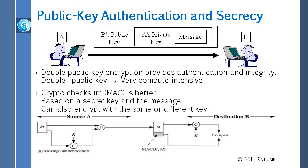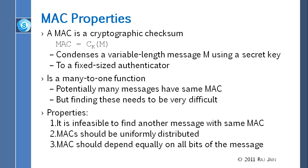This is a common method. The MAC is a cryptographic checksum which uses a key K, and it condenses a variable-length message using a secret key to a fixed-size authenticator. It is like a hash with a key — a many-to-one function, so many messages can have the same MAC, but finding these messages is very difficult. Like a hash, it is a one-way function: given the MAC, you cannot calculate the message. Therefore it is infeasible to find another message with the same MAC, MACs are uniformly distributed, and MACs depend equally on all bits of the message.